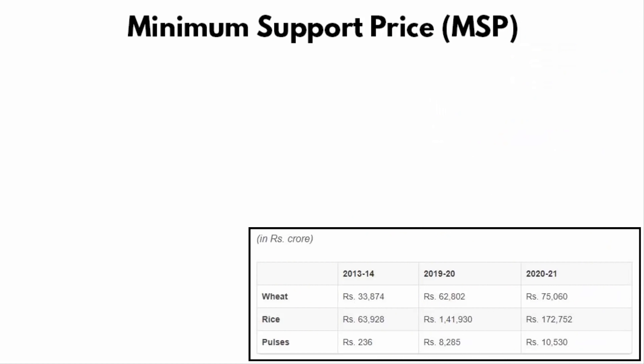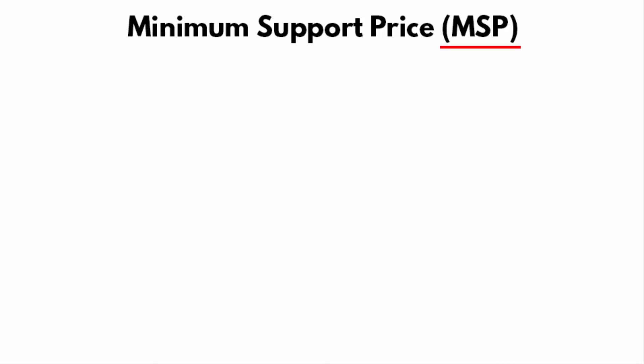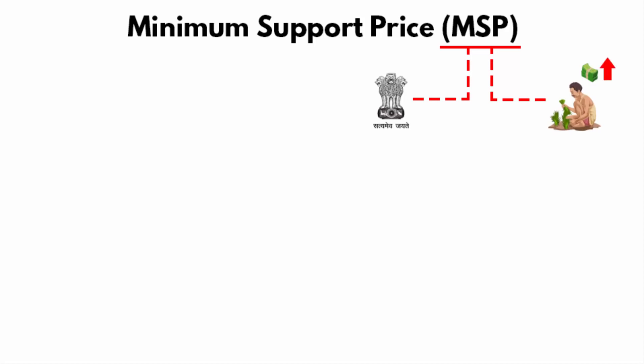Here is the list of three essential commodities whose minimum support price — in other words, the rate at which the government of India procures these three items — has gone up year after year. Even if the government increases the MSP, it is not necessary that the farmers are actually benefiting from it.